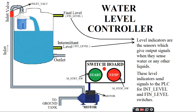The motor is connected to a switchboard which has two buttons: a start button and a stop button. Whenever we press the start button, the motor switches on and starts pumping water from the ground tank to the overhead tank. The stop button is connected to another switch that can stop the motor and stop the water flow.